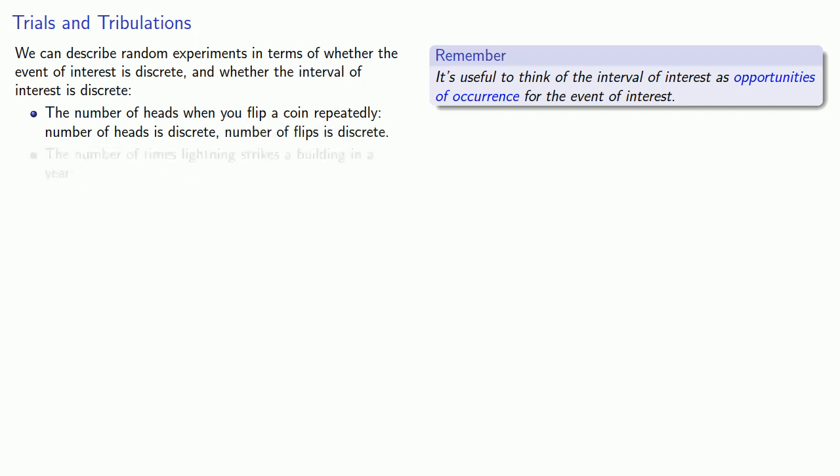On the other hand, consider the number of times lightning strikes a building in a year. Here, again, the number of times lightning strikes a building is a discrete quantity. On the other hand, lightning can strike a building at any time, and time is continuous.